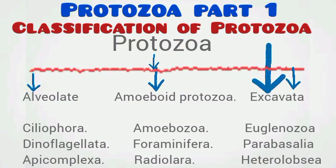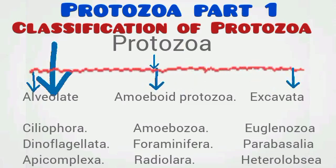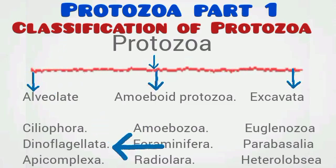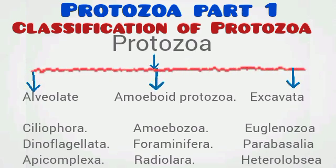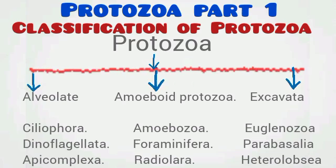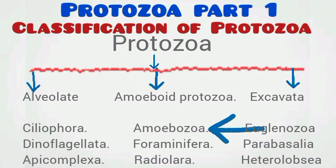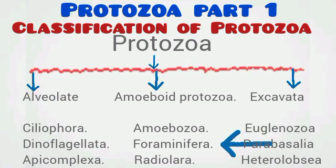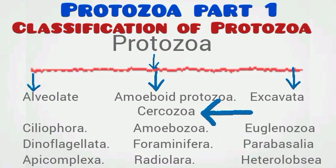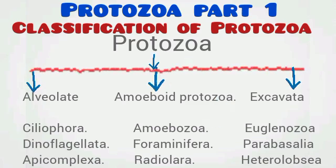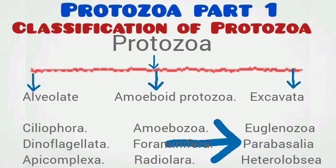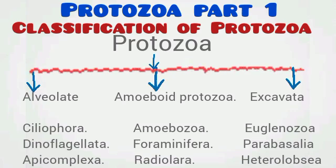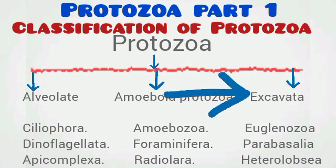Under the Alveolates we have the phylum Ciliophora, phylum Dinoflagellata, and Apicomplexa — meaning ciliates, dinoflagellates, and apicomplexans originated from a common ancestor. The Amoebozoa, Foraminifera, Radiolaria, and Cercozoa originated from the common clade called Amoeboid protozoa. The Euglenozoa, Parabasalia, and Heterolobosea originated from the common ancestor called Excavata.